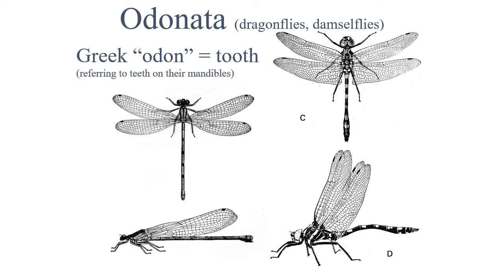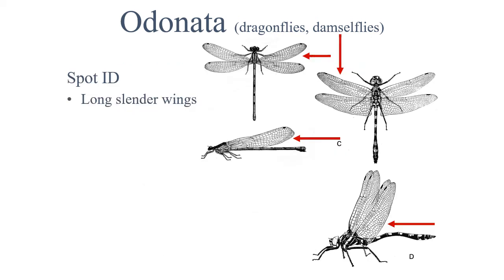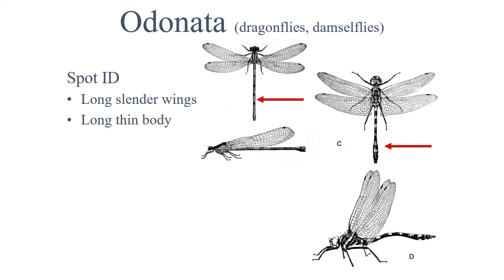Now we're going to cover some of the major groups of insects. First off, we have Odonata, which include dragonflies and damselflies. You can identify odonates by their long, slender wings and long, thin body. Dragonfly and damselfly nymphs, or the juveniles, are actually aquatic and live in wetlands and streams, then emerge into the adult winged dragonflies. Both juvenile and adults are extremely predacious.